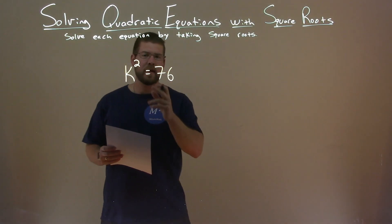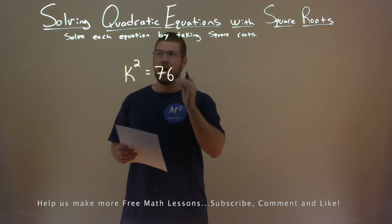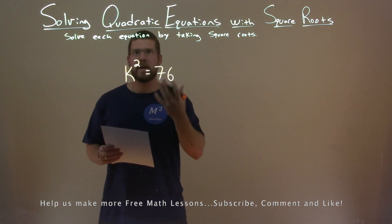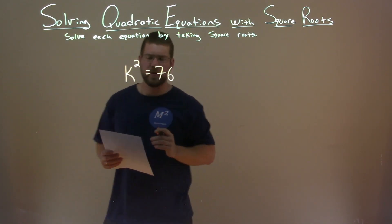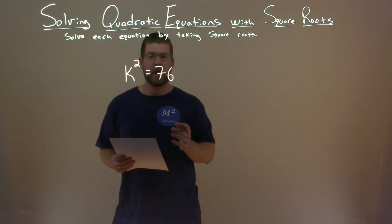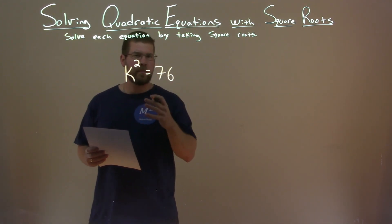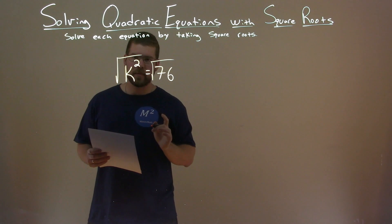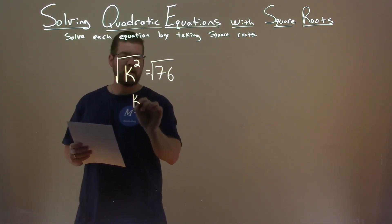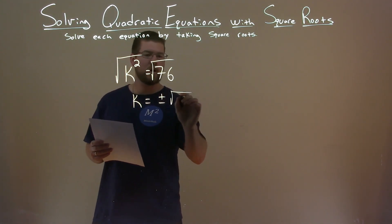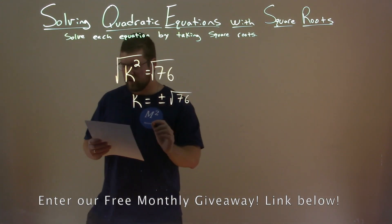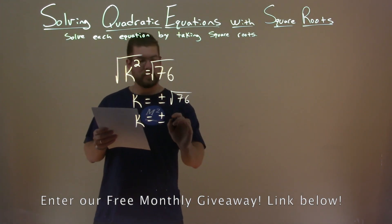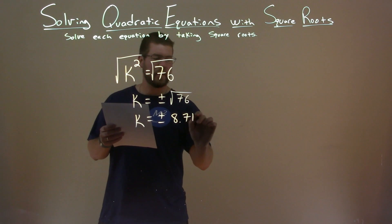We're given this problem right here: k squared equals 76, and we want to solve this equation by taking the square root. So we have our variable k by itself — well, it's squared, but it's by itself here. So this is actually a fairly simple problem. The opposite of squared is taking the square root. So if we take the square root of both sides, we're left with k by itself equals plus or minus the square root of 76, which is approximately 8.718.